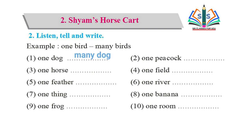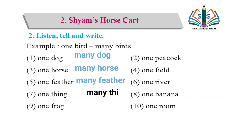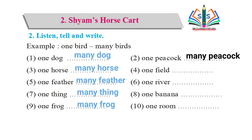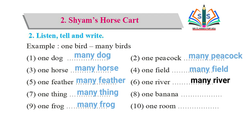سارے کتے۔ One horse, many horses - ایک گھوڑا، بہت سارے گھوڑے۔ اس طرح ہم لوگوں کو ہر word کے ساتھ many لگا کر اس کو complete کرنا ہے۔ One feather, many feathers; one thing, many things; one frog, many frogs; one peacock, many peacocks; one field, many fields; one river, many rivers; one banana, many bananas.